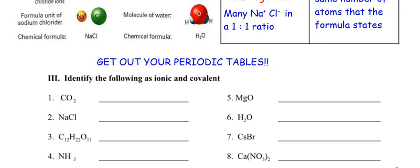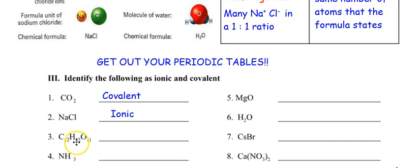Carbon is a non-metal, and oxygen is on the right side of the staircase — also a non-metal. Non-metal plus non-metal means covalent. For number two, sodium chloride: sodium is on the left side of the staircase, so it's a metal. Chlorine is on the right, so it's a non-metal. Metal plus non-metal means ionic. For number three, you have non-metal, non-metal, non-metal — that is covalent. That is our table sugar, which we used in our demo.